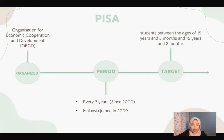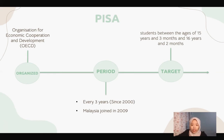Let's look at the PISA background. PISA is organized by the Organisation for Economic Cooperation and Development, known as OECD. PISA starts in 2000 and is done every three years. Malaysia has joined PISA since 2009 until now. PISA also targets students between the age of 15 years and 3 months and 16 years and 2 months.